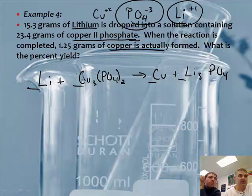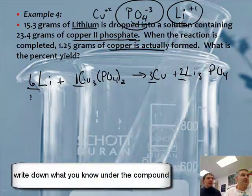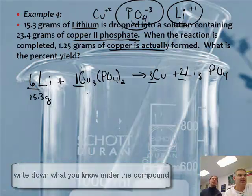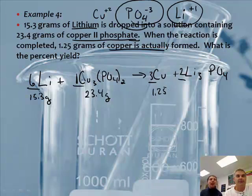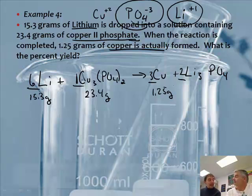Yeah. Now we go back and we balance the equation. The complex guy is this one right here, so we'll leave him alone. So let's do the copper first. Put a three there. We got two phosphates. So if I put a two here, this gives us a six over here. Now what do we know? We know 23.4 grams of copper II phosphate and 15.3 grams of lithium. Interesting. Can I throw this one at you, Mr. Sams? 23.4 grams and we get 1.25 grams. We have two reactants that both have a mass. This is a limiting reactant problem.